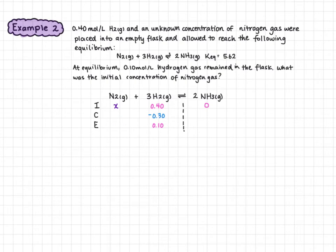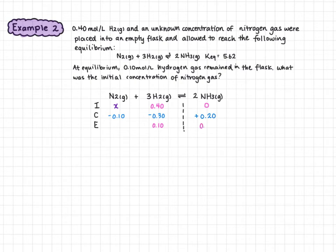Hydrogen has a coefficient of 3 and a change of 0.30. Nitrogen has a coefficient of 1, so its change is 3 times smaller — negative 0.10. Ammonia has a coefficient of 2, so its change is twice as much as nitrogen's, and positive: positive 0.20. Adding down the columns, ammonia has an equilibrium concentration of 0.20, and nitrogen has an equilibrium concentration of x minus 0.10.